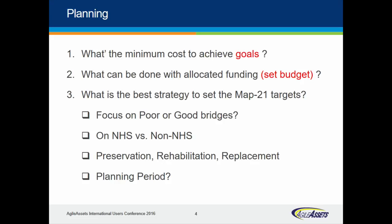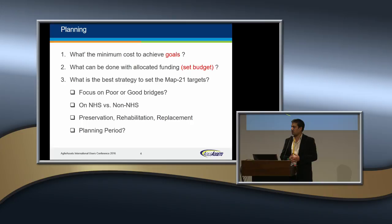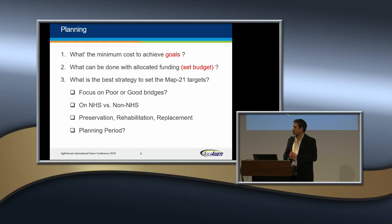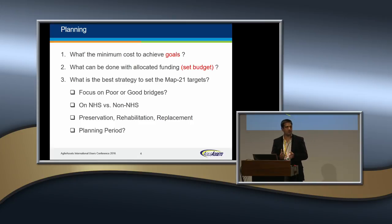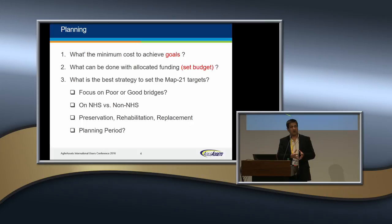Another question is: given allocated funding — and FAST Act does provision certain dollars for each individual type of program — what can you do with that? What kind of performance targets can you reach given a set budget? You can break those questions down into strategy: what kind of program do I need to fix poor bridges, fix good bridges, bridges on the NHS system versus non-NHS? What does my preservation program need to look like — how many rehabilitation treatments versus preservation? Should we do replacements now or postpone?